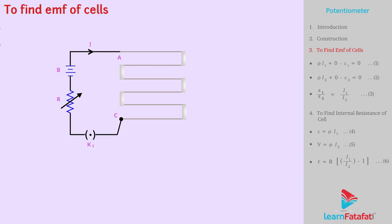Wire of potentiometer is uniform. Hence, potential difference between A and any point at length l from A is given by E(l) = φl, where φ is potential drop per unit length.